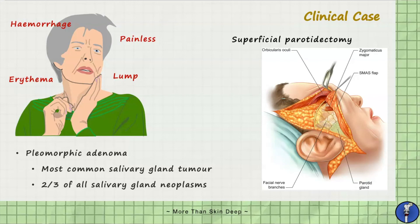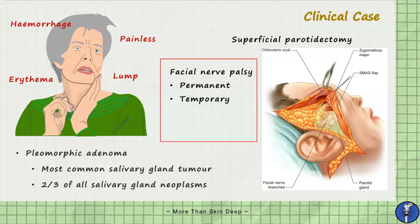Due to the delicate and fragile nature of the facial nerve within this region, it is vital that branches of the facial nerve are not accidentally injured during surgery. Post-operative complications of a parotidectomy include temporary or permanent facial nerve palsy, infection, or Frey's syndrome as a result of injury to the auriculotemporal nerve. This condition causes increased sweating and facial flushing whilst eating and is otherwise known as gustatory sweating.